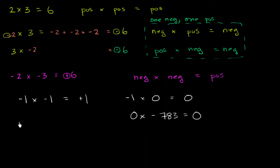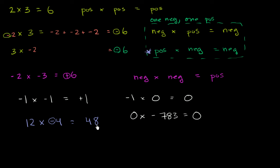Now let's do some interesting ones. What about 12 times negative 4? Well, 12 times positive 4 would be 48, and we're in the circumstance where exactly one of these two numbers is negative. If exactly one of the two numbers is negative, the product is going to be negative. You can imagine this as repeatedly adding negative 4 twelve times, and so you would get to negative 48.